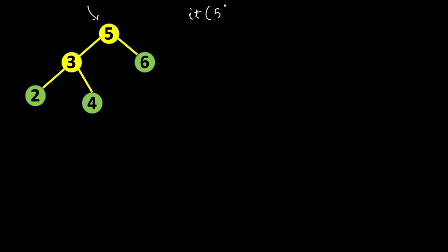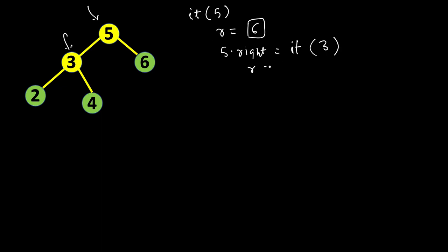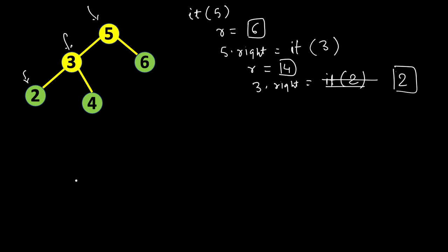Let's run the code through an example. Root is node 5, so we call invert tree on 5. It does the null check — not null — then stores right equal to 6. Then five dot right equals invert tree of 3. Again it performs the null check, stores right equal to 4, and calls invert tree on 2. The inversion of a single node 2 is 2 itself, so three dot right becomes 2.